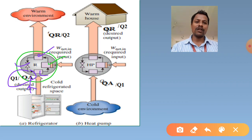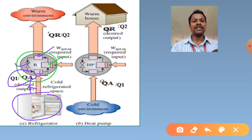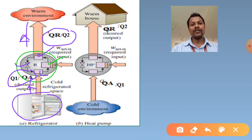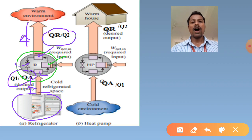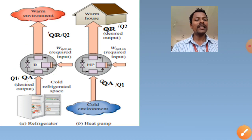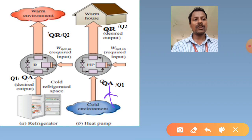This unit - ton of refrigeration - is very important for solving problems. Ice making capacity is the ability of the refrigerator to make ice starting from water at room temperature. Relative COP is defined as the ratio of actual COP of the refrigerator to the theoretical COP. The difference between actual and theoretical COP will be understood while discussing further topics.